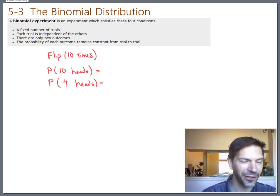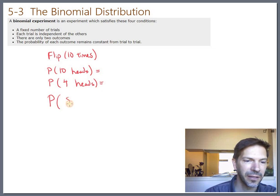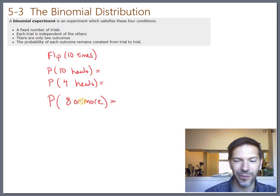Okay, let's take a look at how to use the technology on a couple examples. So let's pick up where we left off with this experiment of flipping a coin 10 times and the probability of getting 10 out of 10 heads or 4 out of 10 heads. And just to ask an extra question, let's say you can win if you get at least 8. So let's also get the probability of 8 or more.